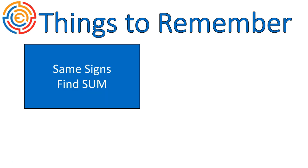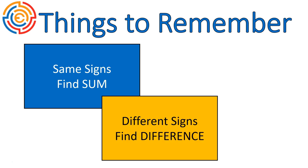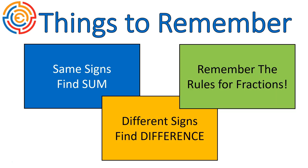A couple things to remember. If they have the same signs, you find the sum. If the signs are different, find the difference. And remember the rules for working with fractions, adding and subtracting. We did not go over those rules in this lesson, but you need to know them if you are going to be adding and subtracting fractions. And a big part of rational numbers is fractions. That's actually the definition of rational numbers, numbers that can be written as fractions. I hope that lesson was helpful for you. Have a wonderful day.